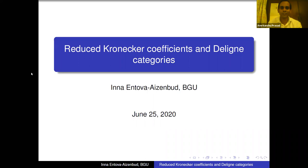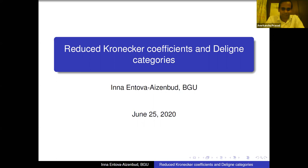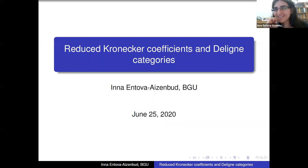Welcome everybody to the IMSE Algebraic Combinatorics Seminar. It's a great pleasure to have today Ina Entova-Eisenberg from Ben Gurion University, and she's going to talk about reduced Kronecker coefficients and Deligne categories. Thank you very much, and good evening or good morning to everyone. Thank you very much for inviting me. It's a pleasure, and I hope that someday I can actually visit physically and not just by Zoom.